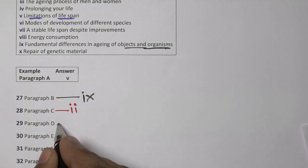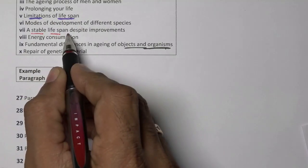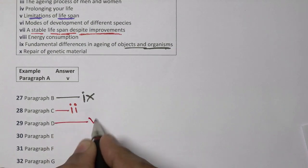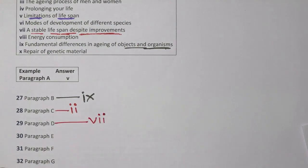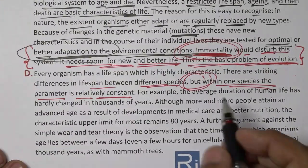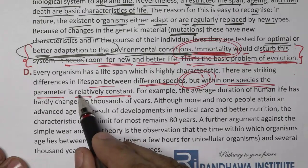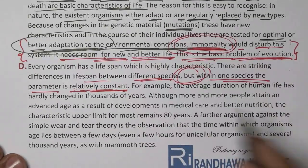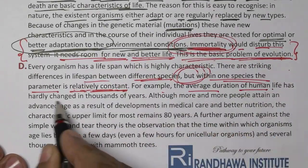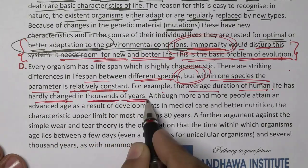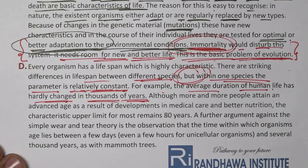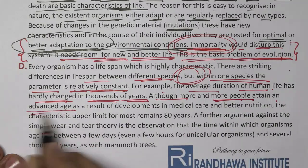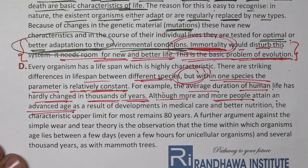Heading: a stable lifespan despite some improvements. There are striking differences in lifespan between different species, but within one species it is relatively constant. Despite improvements, the average duration of human life has hardly changed in thousands of years. Average lifespan hasn't changed much, although more and more people attain an advanced age.